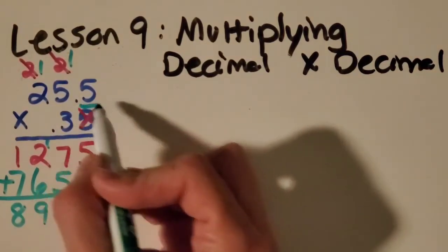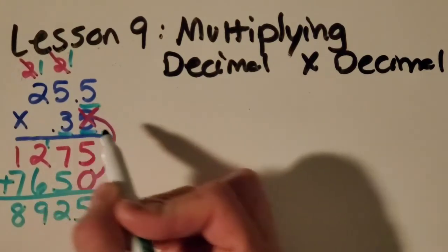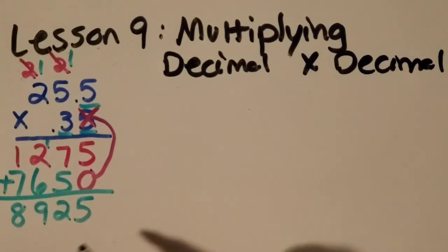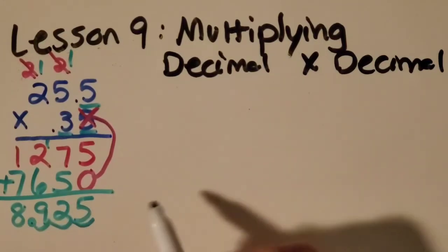And then let's see one, two, three decimal places. So think about where that decimal is going to go. Good job.